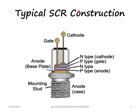Typical SCR construction is shown in this picture. It has a gate close to the cathode and there is a mounting stud. The case forms the anode. There is a base plate and we have the four layers P, N, P, N.